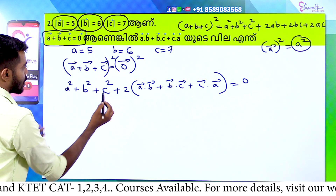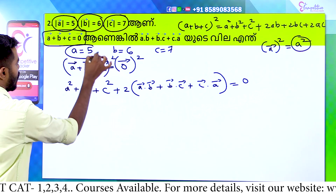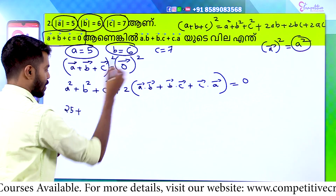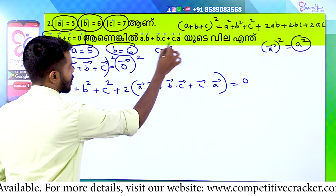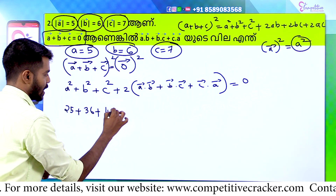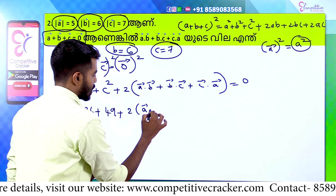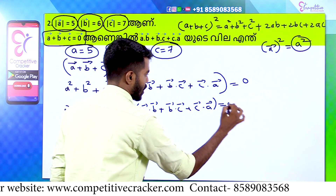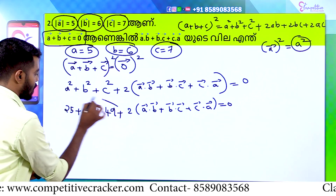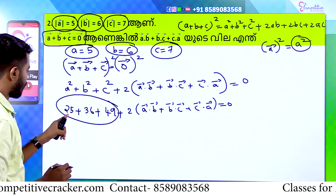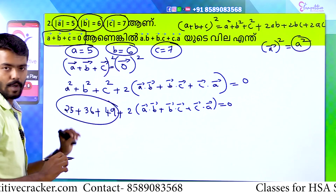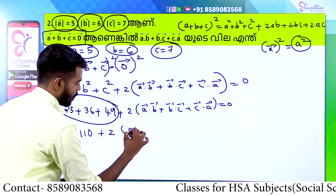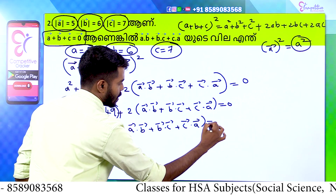We have A square, B square, C square. A is 5, so A square is 25. B is 6, so B square is 36. C is 7, so C square is 49. Plus 2 into Vector A dot Vector B plus Vector B dot Vector C plus Vector C dot Vector A equals zero. So 25 plus 36 plus 49 equals 110. Therefore 110 plus 2 times the dot product expression equals zero.